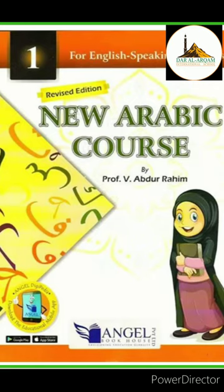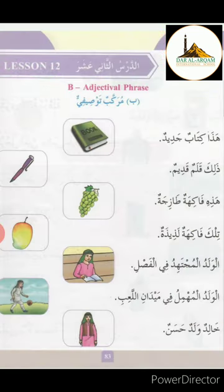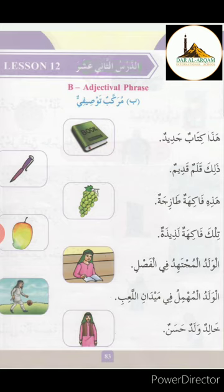Bismillah ar-Rahman ar-Raheem. New Arabic Course 1, Lesson number 12. الدرس الثاني عشر — الدرس means 'the lesson', إثنى عشرة means 12. The topic of this lesson is adjectival phrase — مُرَكَّبٌ وَصْفِيٌّ.